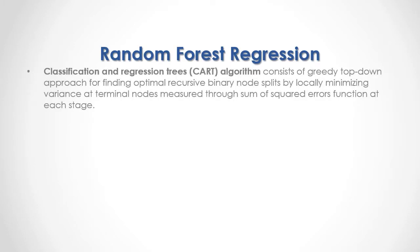The Classification and Regression Trees algorithm consists of a greedy top-down approach for finding optimal recursive binary node splits by locally minimizing variance at terminal nodes, measured through the sum of square errors function at each stage. As a formula, we have the minimization of sum of square errors equals the sum from the first to the last of the difference between output target feature data minus terminal node output target feature mean, that result to the power of 2.